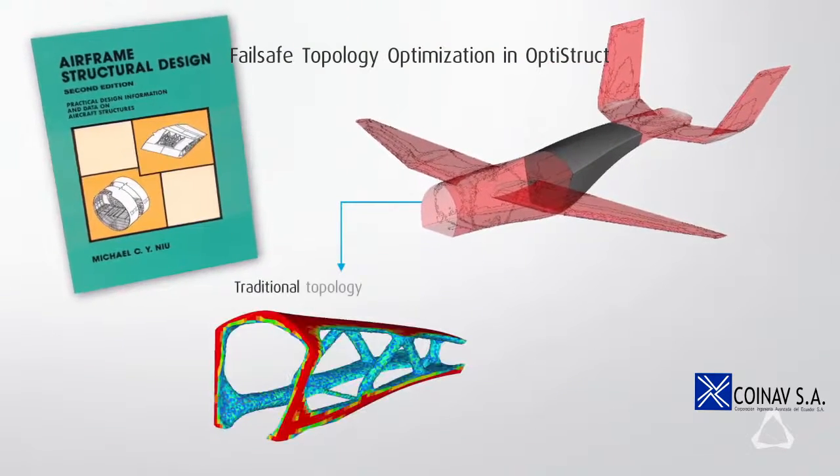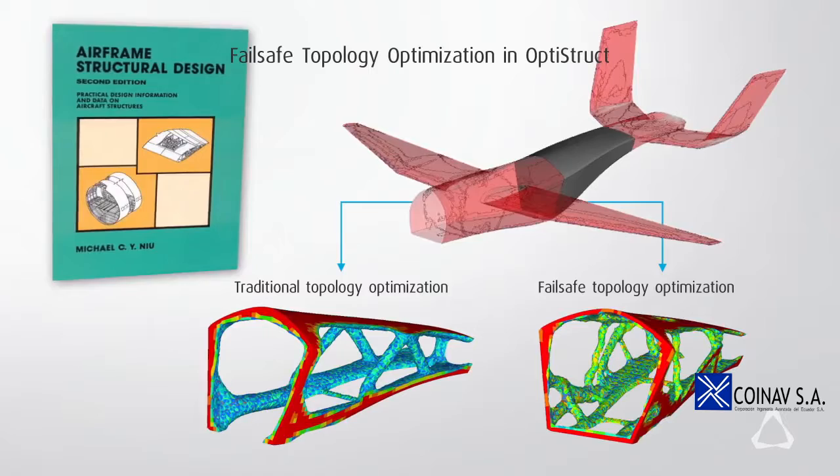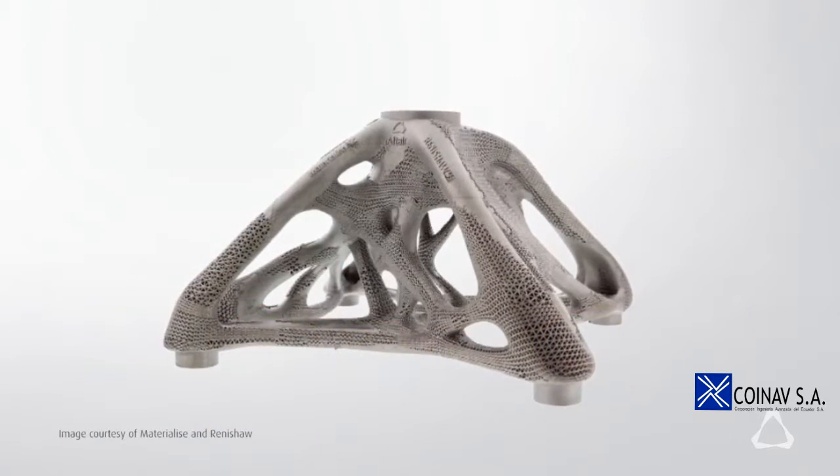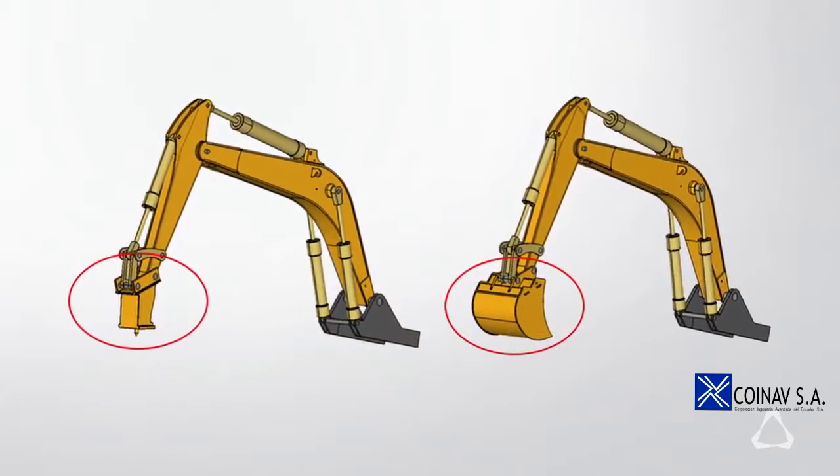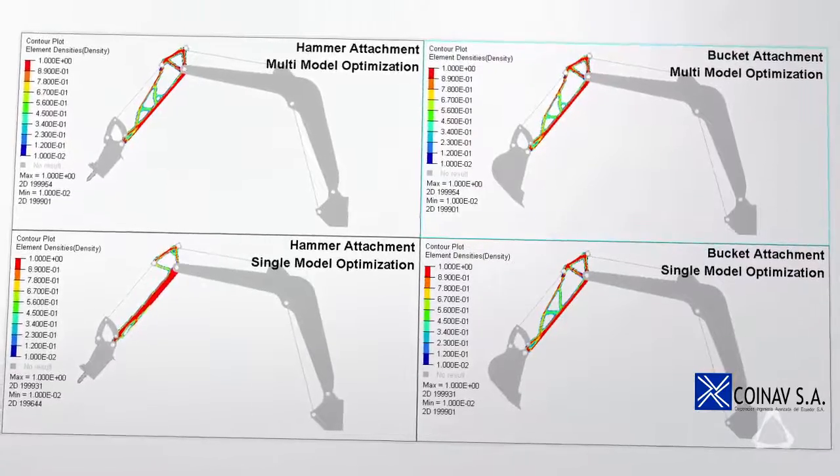In OptiStruct, we spend a lot of time continuing the development for topology optimization. We now have fail-safe topology optimization. We kept on working on the manufacturing solution to do lattice optimization. The multi-model optimization is really maturing, and we find more and more applications where that helps.